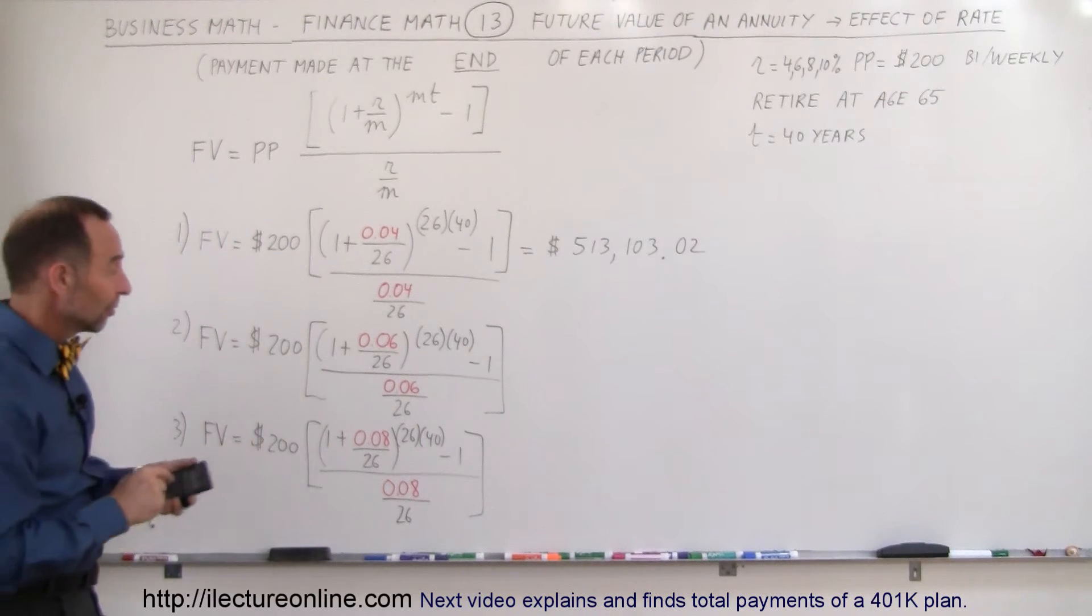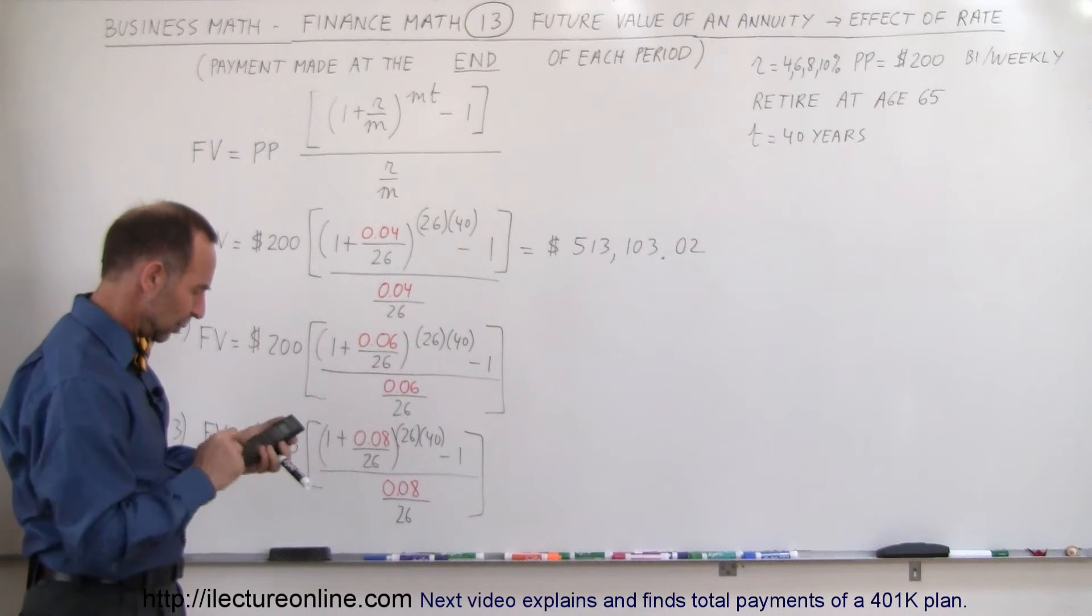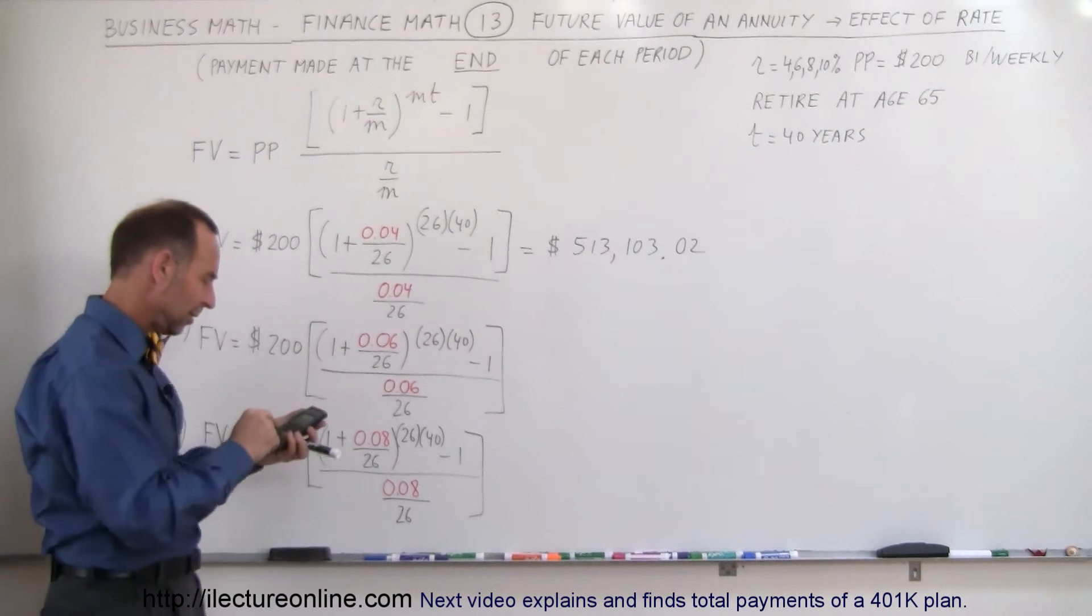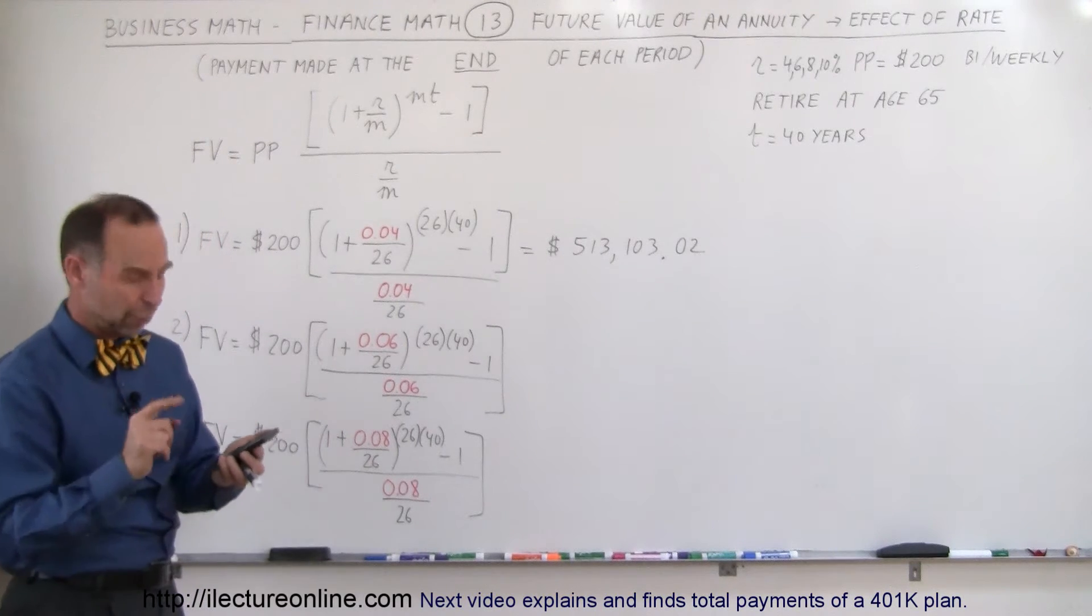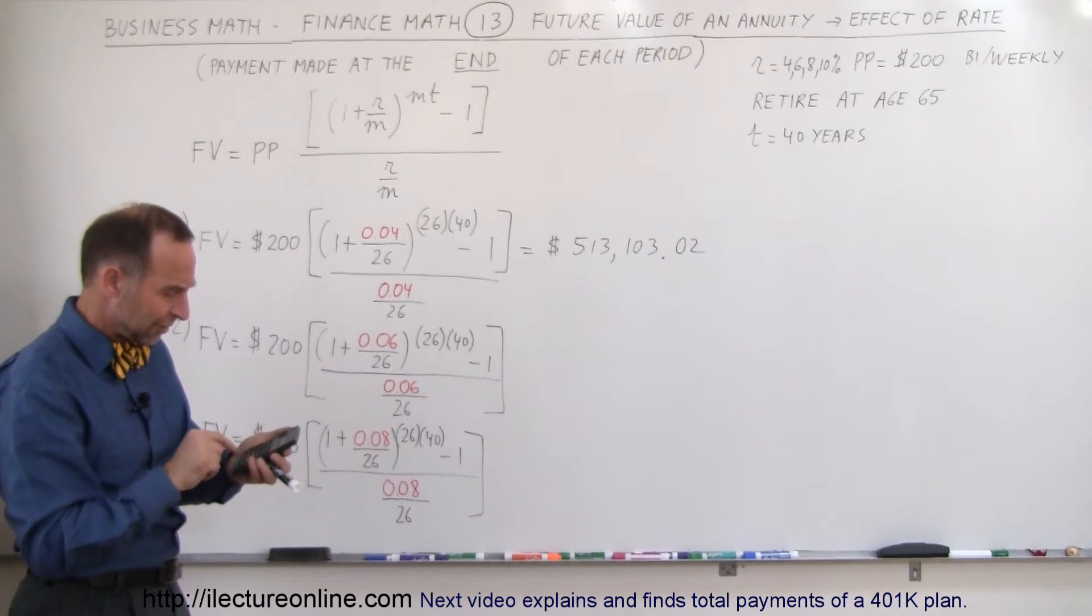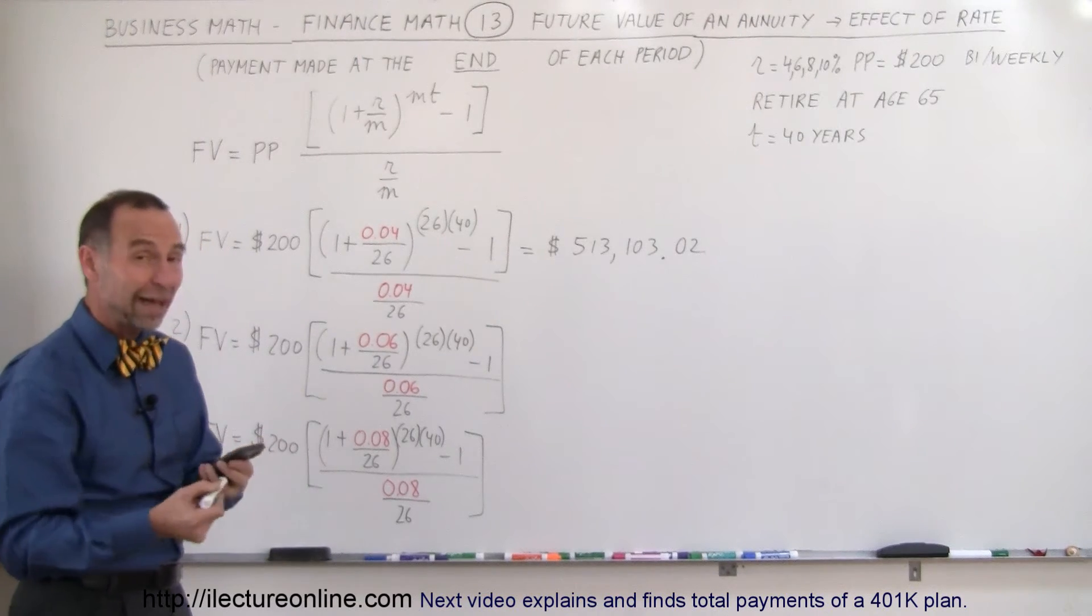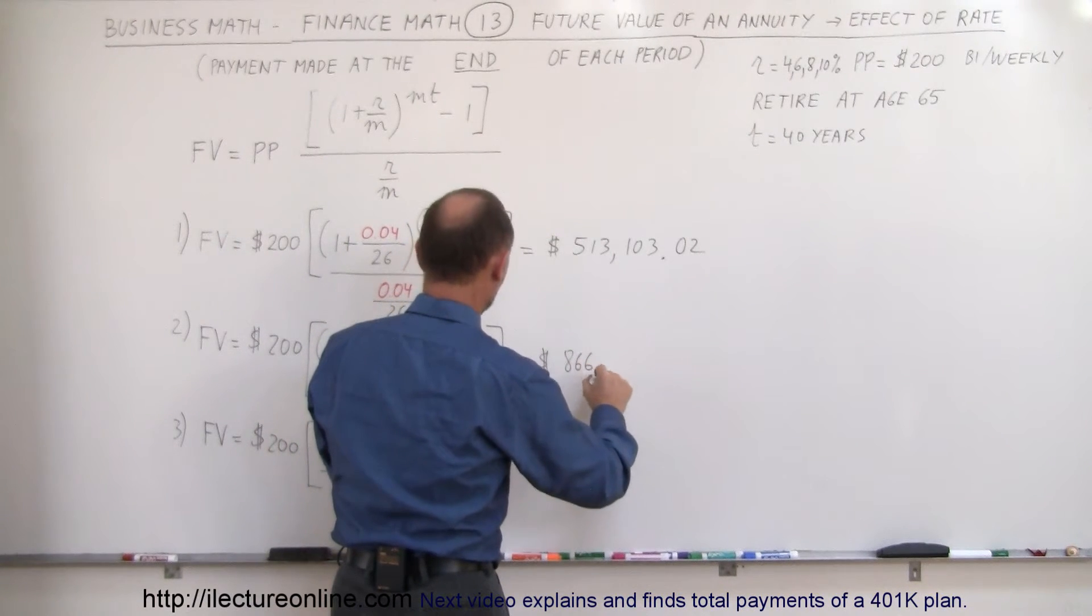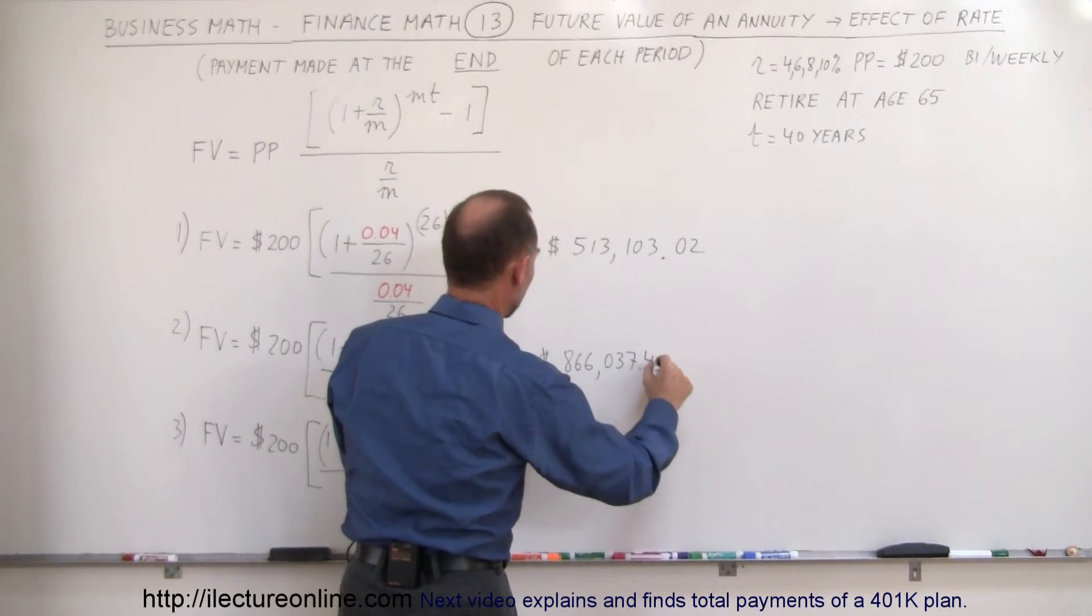What if the rate was 6%? So we do the same calculation. So 0.06 divided by 26 plus 1, raise that to the 26 times 40 power. Subtract 1 from that. Then divide by this, which is the same as multiply times the inverse, so times 26 divided by 0.06, and multiplying that times 200. So after 40 years, you would have in the bank $866,037.43.